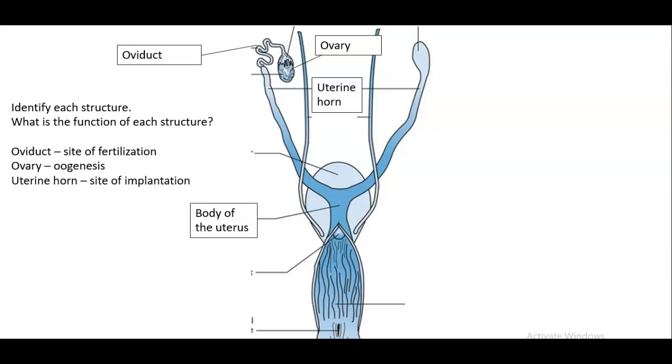And the uterine horn is the site of implantation. So the uterine horn is where the zygote starts to grow and becomes an embryo and a fetus over time. And that is the location where puppies or kittens would develop in the dog and cat. The body of the uterus, that's more, I think that's the site of implantation for, or yeah, implantation for humans, but not for dogs and cats.